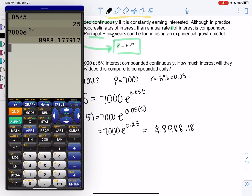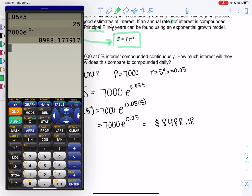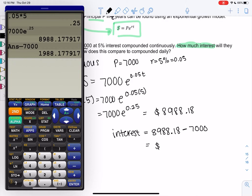But I wanted to know how much interest. So interest would just be the difference in what we have now, 8,988.18, minus the money we put in. So minus 7,000. And so the interest would be 1,988.18.